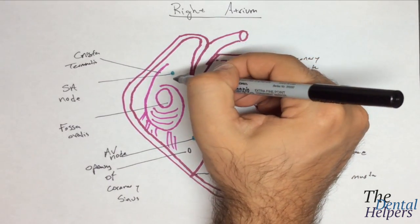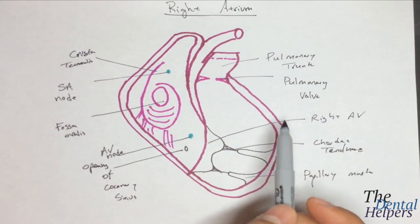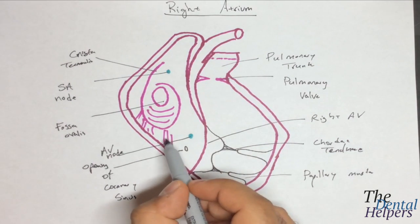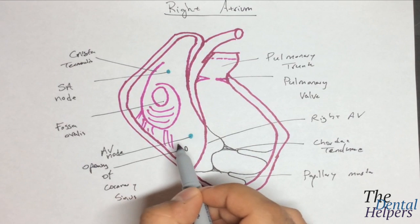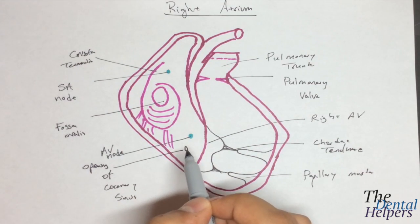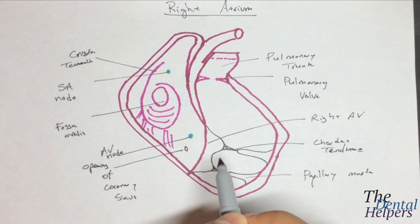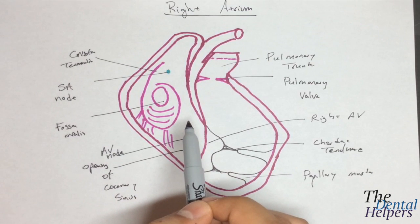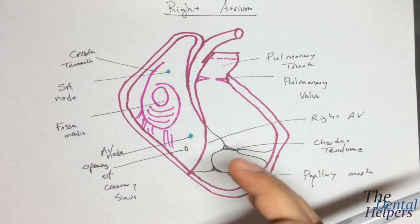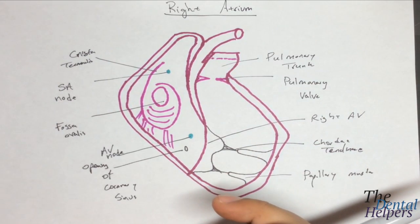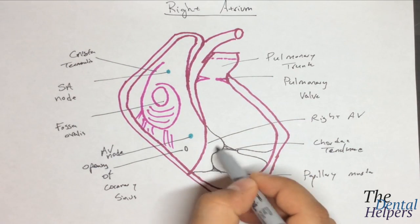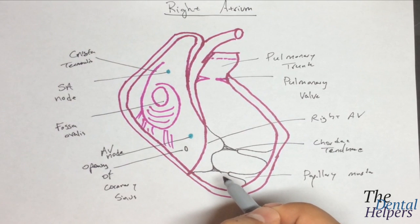Then we have the valve of the inferior vena cava and the coronary sinus. These are going to be like sickle-like flaps that are going to guard the entrance of the vessels. Then we have the fossa ovalis, which is right here. It's an oval-shaped depression in the interatrial septum that is evident in the right atrium, and it's a remnant of the fetal foramen ovale.